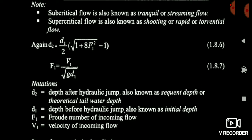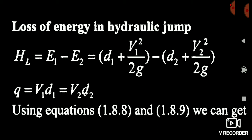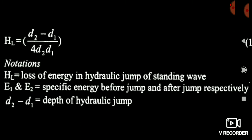Many times in hydraulic jump problems they will ask a question about the loss of energy in a hydraulic jump. The loss of energy is nothing but E1 minus E2 — energy before the hydraulic jump minus energy after the hydraulic jump. After calculation, the energy loss due to hydraulic jump is equal to (D2 − D1)³ / (4·D2·D1). This is the simple formula for calculation of energy loss in the hydraulic jump, where (D2 − D1) is the depth of the hydraulic jump.